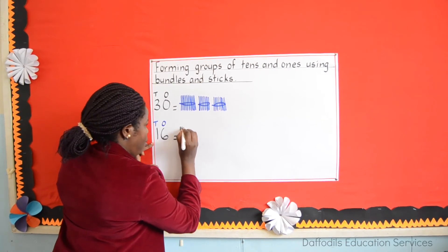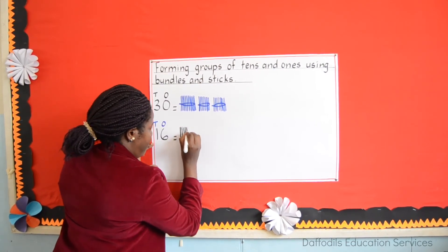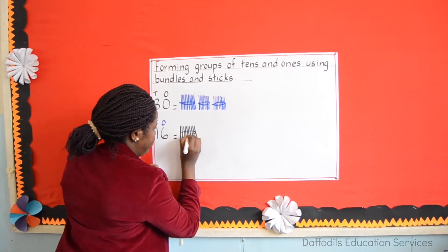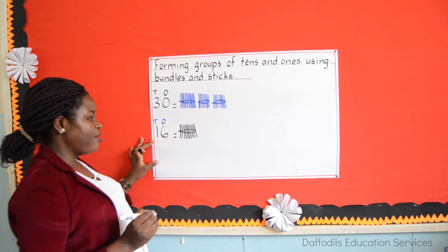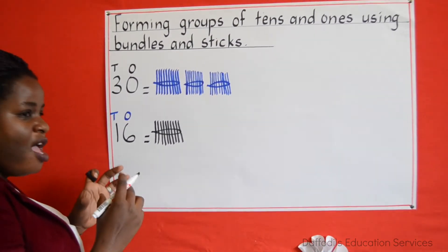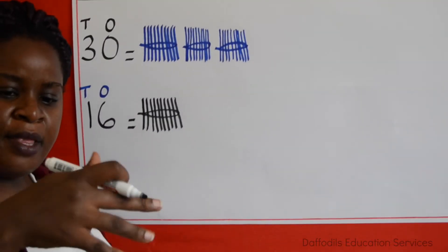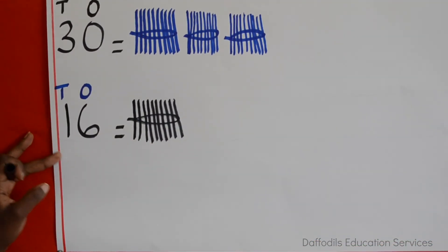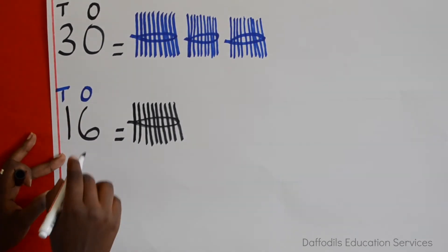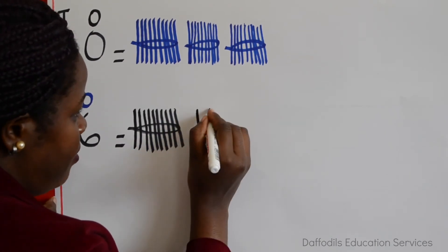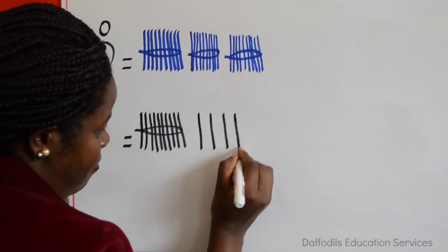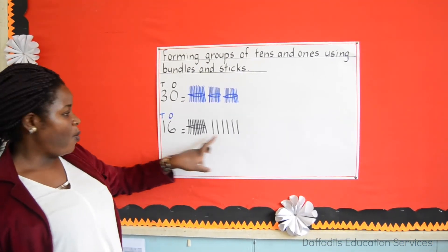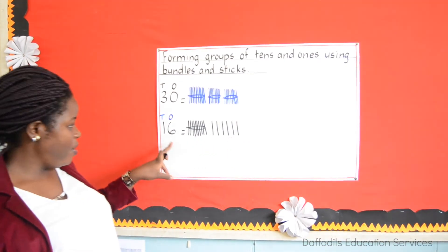Let's draw 1 bundle of 10: 1, 2, 3, 4, 5, 6, 7, 8, 9, 10 — then tie it. Make sure your work is neat; your bundles should be drawn together clearly, the same way you see mine. Now the sticks — with 1s, we draw the sticks. Let's count together: 1, 2, 3, 4, 5, 6. These are the sticks, and our number becomes 16. 1 bundle of 10 plus 6 sticks equals 16.